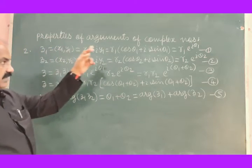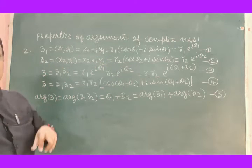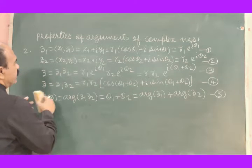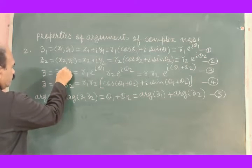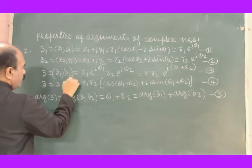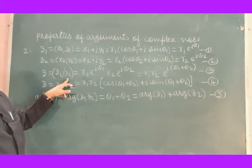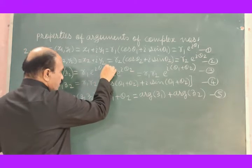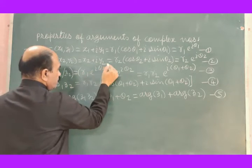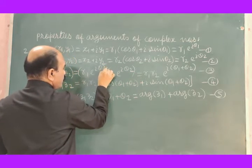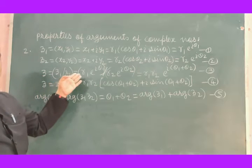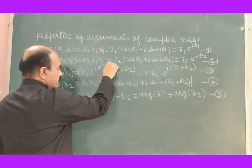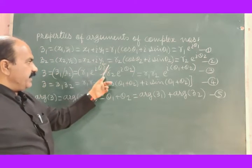To study the second property of arguments, we consider the same two complex numbers: Z1 given by equation 1, Z2 given by equation 2. We find the division of these two complex numbers, Z1 divided by Z2. Complex number Z1 divided by complex number Z2 is a complex number Z. Putting in the values of Z1 and Z2, this is Z1 divided by Z2.